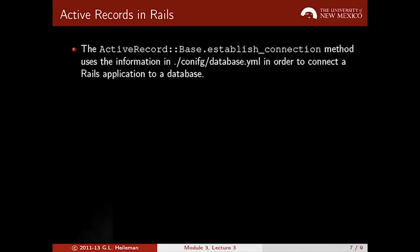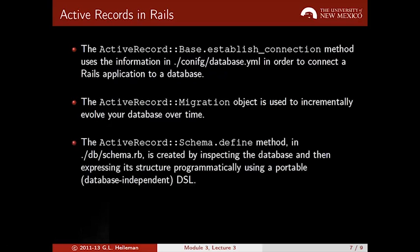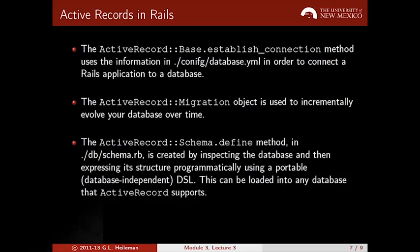The Active Record establish_connection method, which is part of the base class, reads your database.yaml file and makes the actual connection to an underlying database. The migration object is used to incrementally evolve your database over time — migrations can add or remove tables or columns, so you can go both directions. The schema.define method uses the existing database to create your schema.rb file, which is a way of programmatically expressing your database in a portable format — sometimes referred to as a DSL or domain specific language. This schema can be used to connect Rails to any database that Active Record supports.